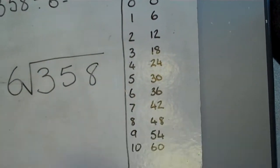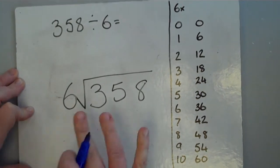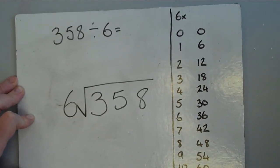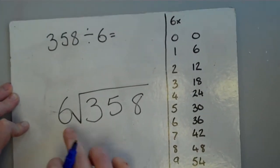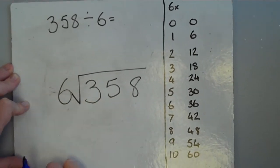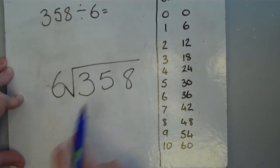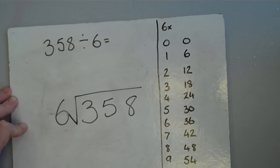That jottings box now is just there to prompt my memory as I go. Now that we've laid it out as a bus shelter method, we're just going to think about fitting 6 into each of these digits in turn. Digit 3, digit 5 and digit 8, always starting on the left hand side.